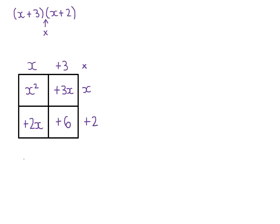And then we've just got to combine the terms that we've got in there. So we've got x squared plus 3x plus 2x plus 6. And we can make that a little bit more simple by combining these x terms here. So that's x squared plus 5x plus 6.